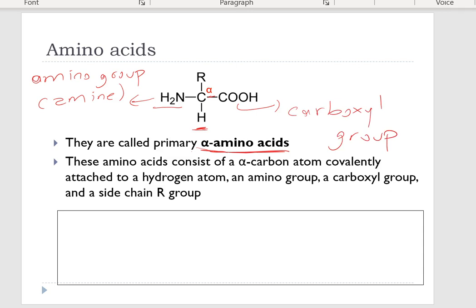On top you see the side chain R group. This R group is very important because amino acids differ only in the chemical nature of the side chain or R group — it is different for each individual amino acid. Each one of those 20 amino acids is differentiated by its R side group.